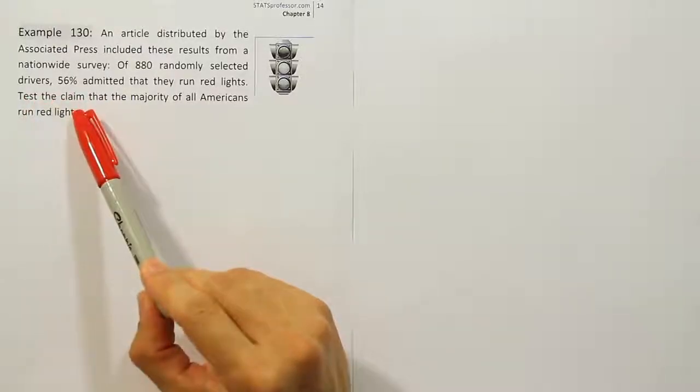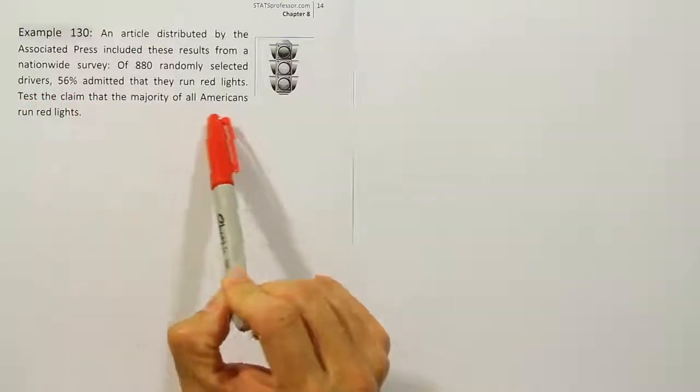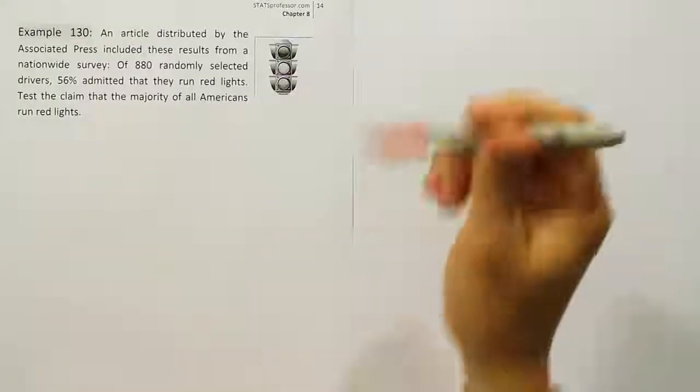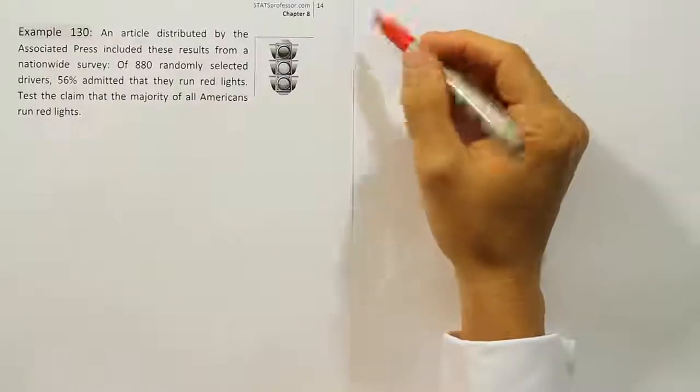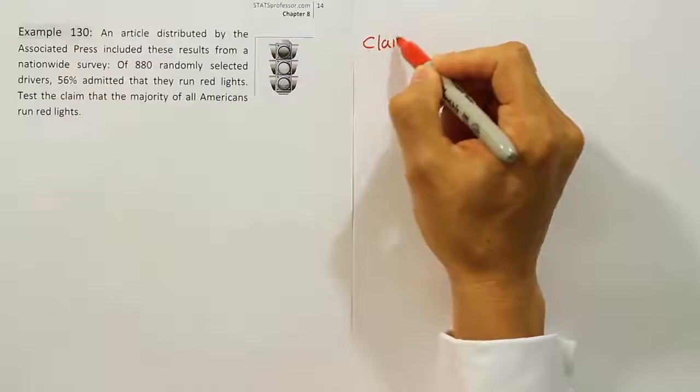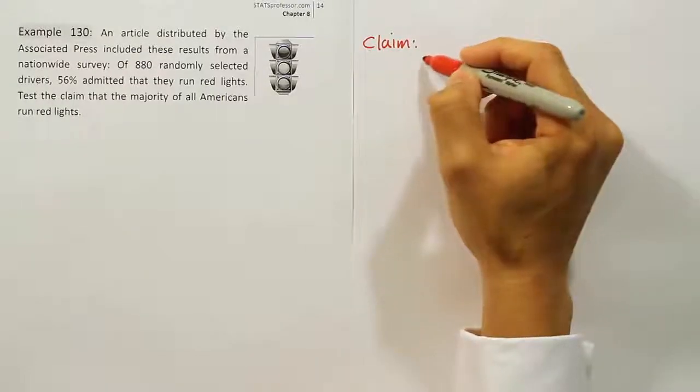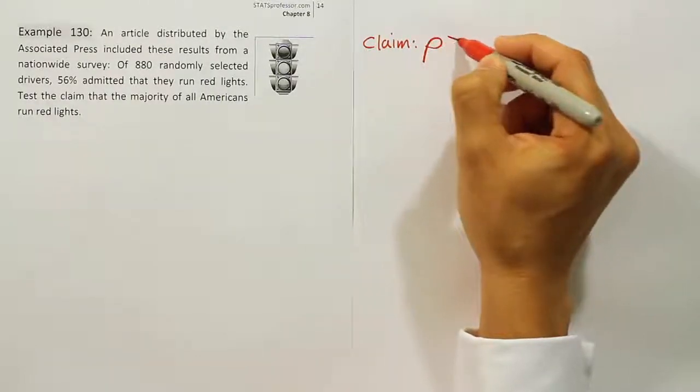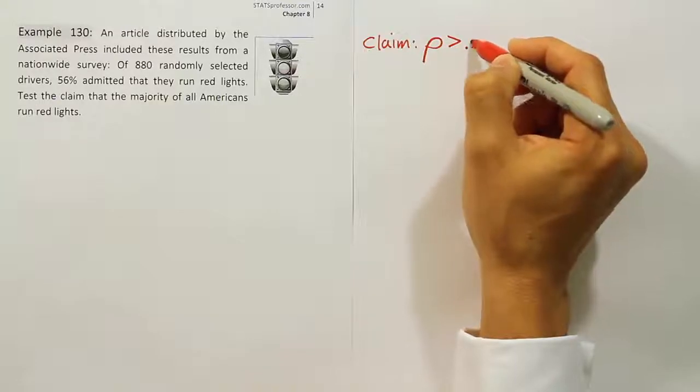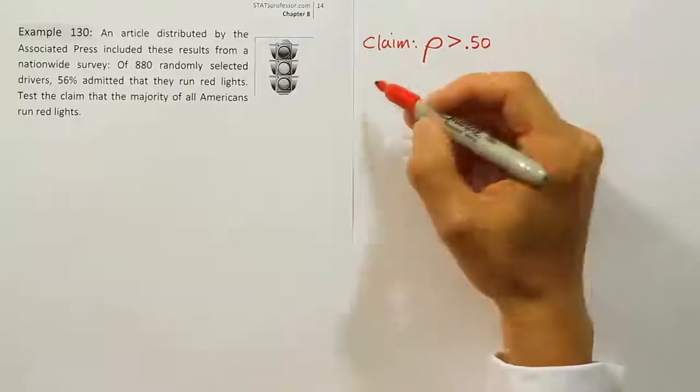Test the claim indicates it's a hypothesis test. The majority of all Americans run red lights implies we're talking greater than 50%. So the claim here is that the proportion of people who run red lights is greater than 50%, or 0.50 as a decimal.